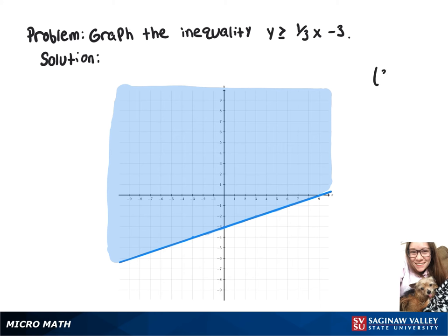And then if we want to test a point, for example the point 3, 1, when we sub in those values, we get 1 is greater than or equal to 1 minus 3, and 1 is greater than or equal to negative 2, which is true, and we see on the graph that the point 3, 1 is in our shaded region.